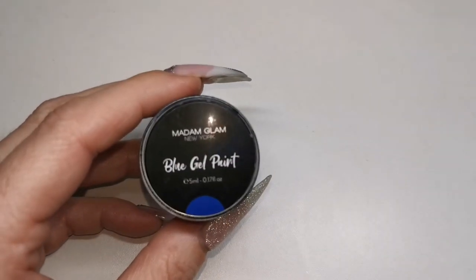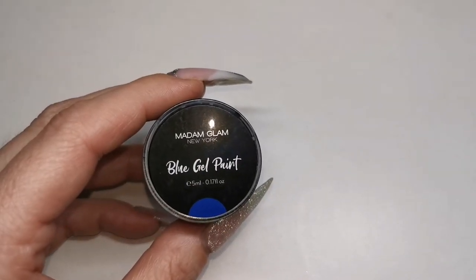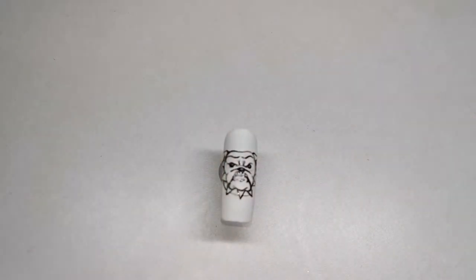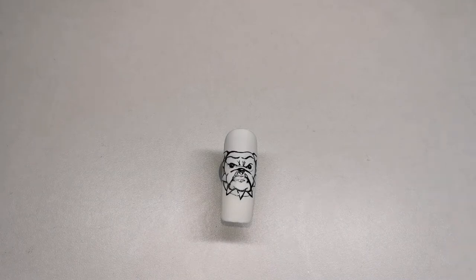So now I'm going to use the blue gel paint. I've pulled out my liner brush. And now I'm going to do the Great Britain flag in the background.